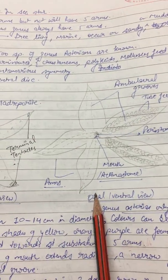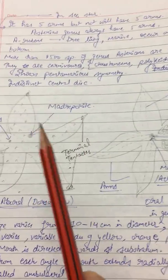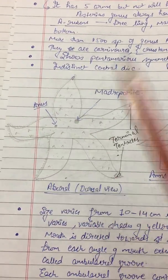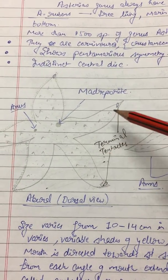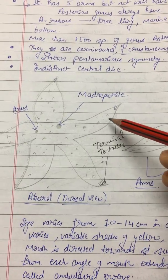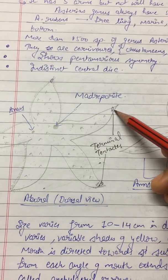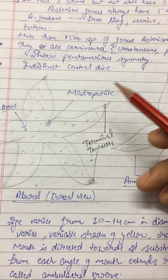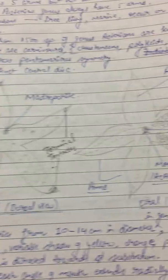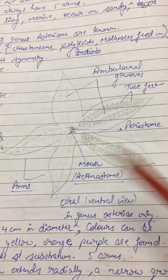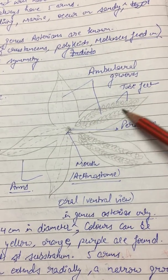The aboral view is the dorsal view and the oral view is the ventral view. On the ventral side is the mouth and on the dorsal side is the anus. At the top of each arm are terminal tentacles, which are olfactory organs. At the base of the terminal tentacles there is a bright red photosensitive eye spot made up of several ocelli. On the oral structure you can see the ambulacral groove.